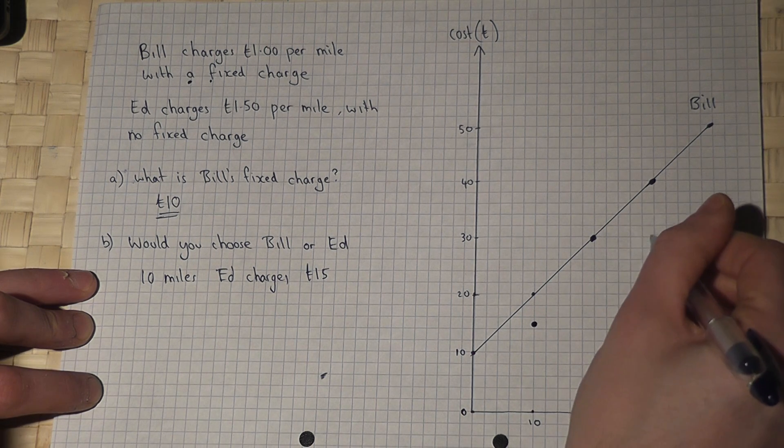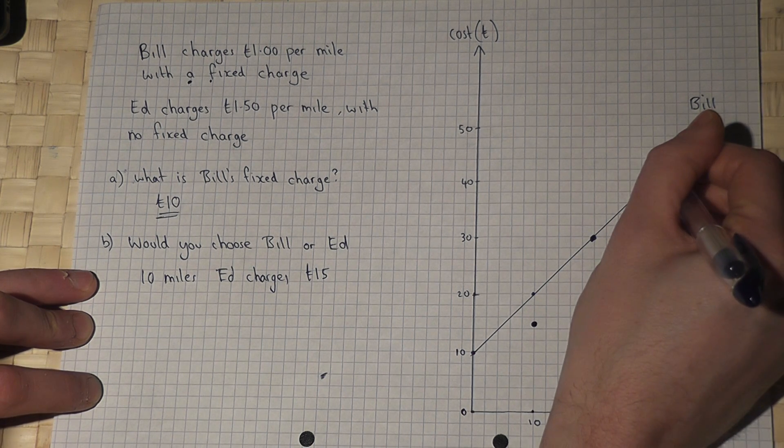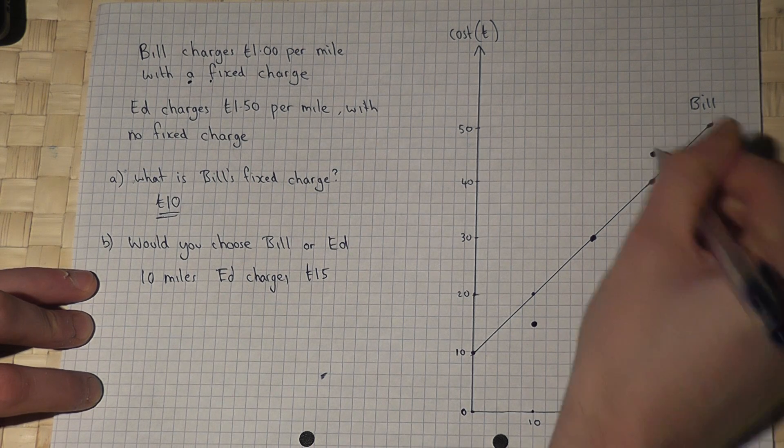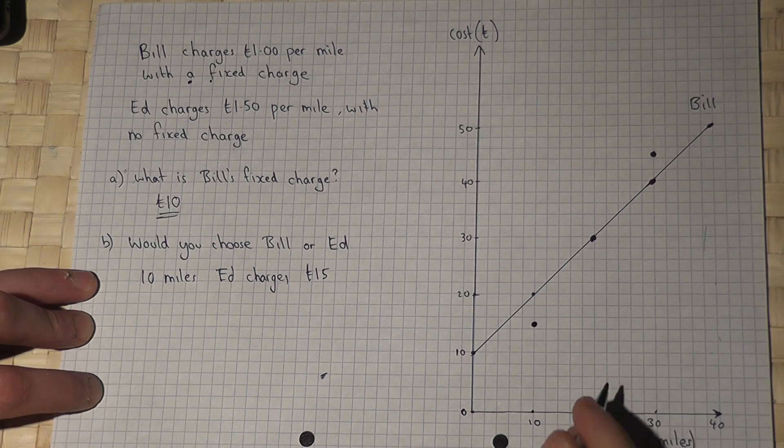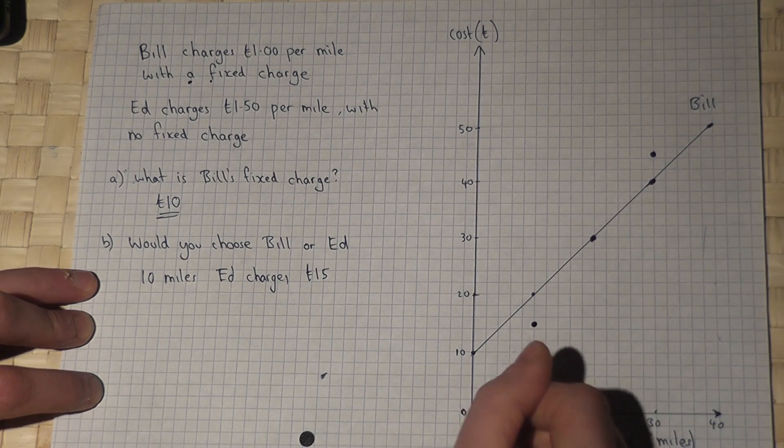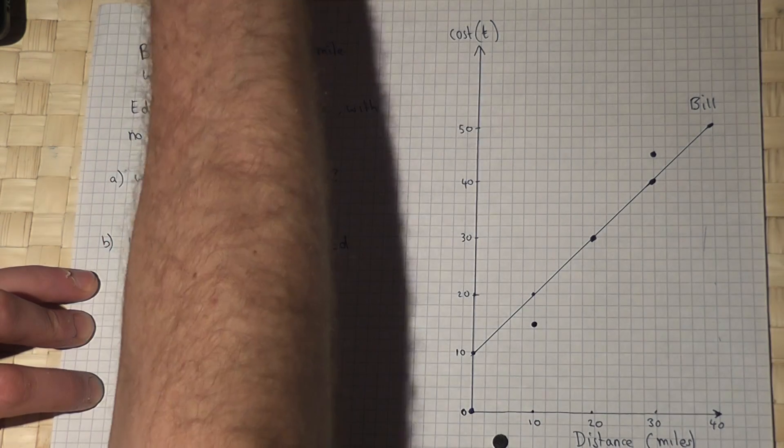30 will be £45, and 40 will be £60. And of course, if you go nowhere, it will be £0, there's no fixed charge.